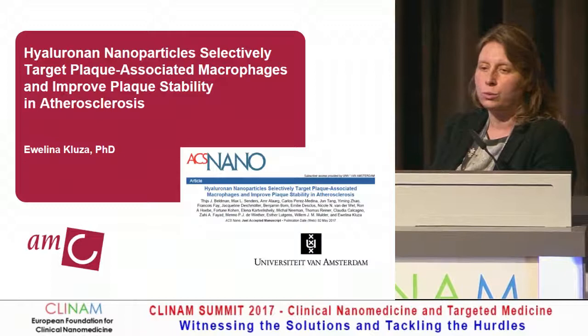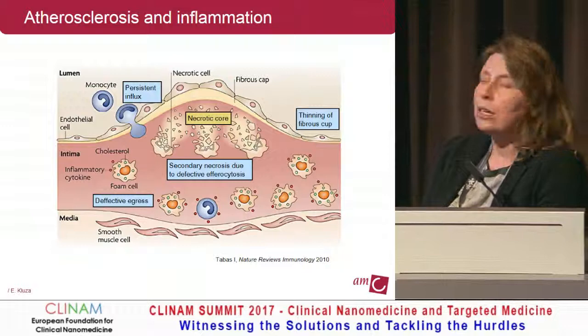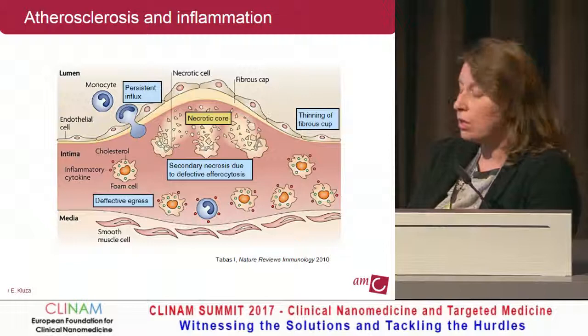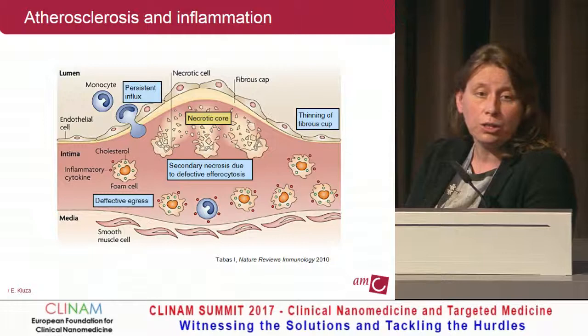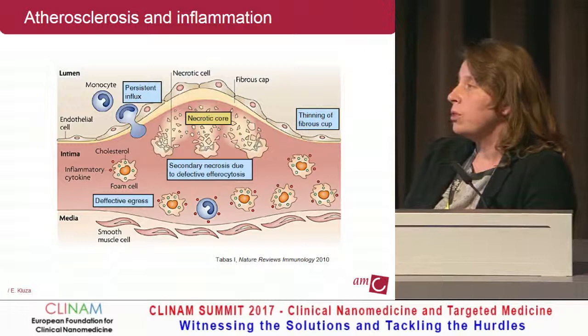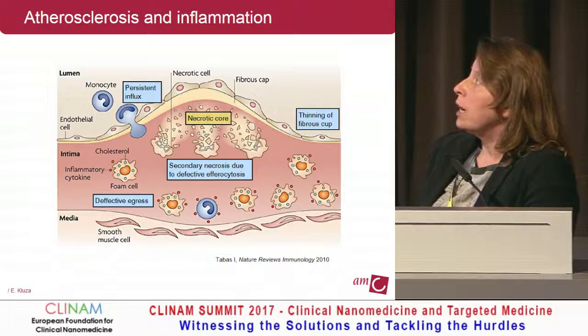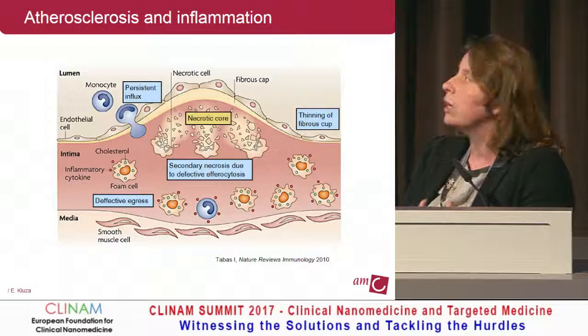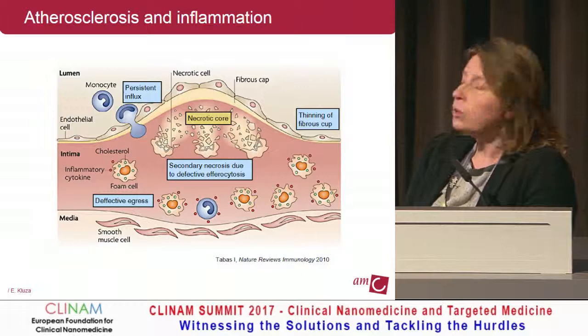We are in the field of atherosclerosis, and our main interest is actually inflammation associated with atherosclerosis. Briefly, it's driven by monocytes, which are supposed to clear up the lipid deposition in the vessel wall, but this process frequently goes wrong. They're transferred into macrophages and foam cells, and they actually become a source of inflammation. So these pro-inflammatory monocytes and macrophages are our main cellular targets.